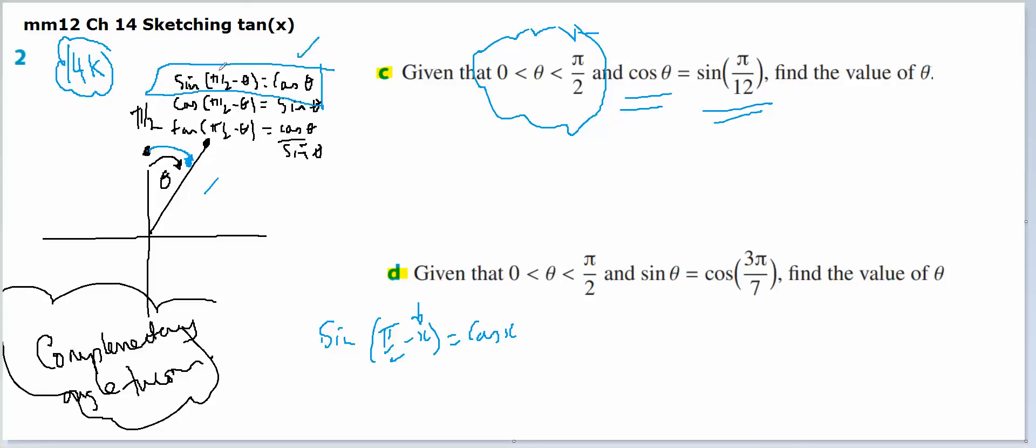Cosine of theta is going to equal this, which means that if cos θ equals the sine of π/2 minus θ, then the sine of π/2 minus θ equals π/12, which means θ equals π/2 minus π/12, which is going to be 6π/12 minus π/12. 5π/12 is going to be the value of theta.